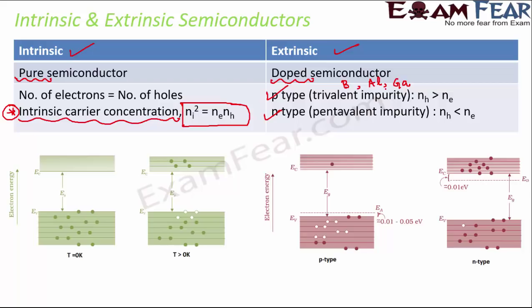Semiconductors like silicon or germanium have four valence electrons. When a trivalent impurity with three valence electrons is added, all bonds form but one electron from the semiconductor is left without a bonding partner. For example, boron's three valence electrons combine with three of silicon's, leaving one electron pending. In P-type, the impurity atoms act as acceptor atoms, creating an acceptor energy level, and the number of holes is always greater than the number of electrons.